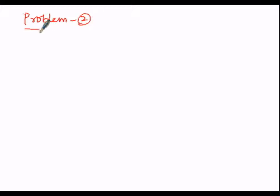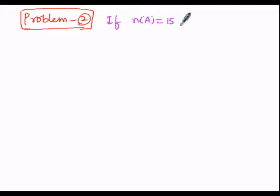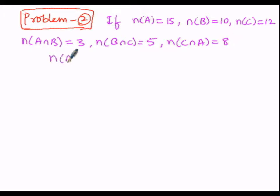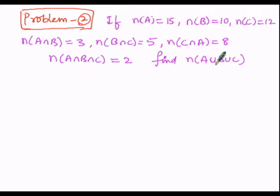Now let us go to problem number two. If N of A is 15, N of B is 10, N of C is 12, N of A intersection B is 3, N of B intersection C is 5, N of C intersection A is 8, and N of A intersection B intersection C is 2, then we have to find out N of A union B union C. Solution starts now.